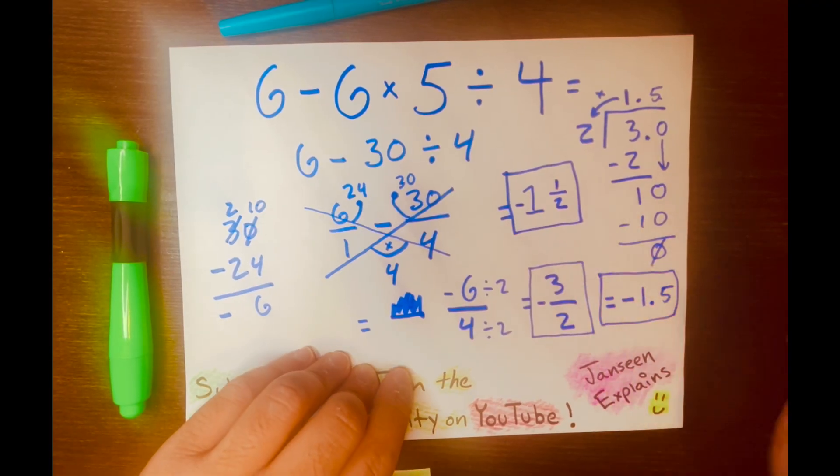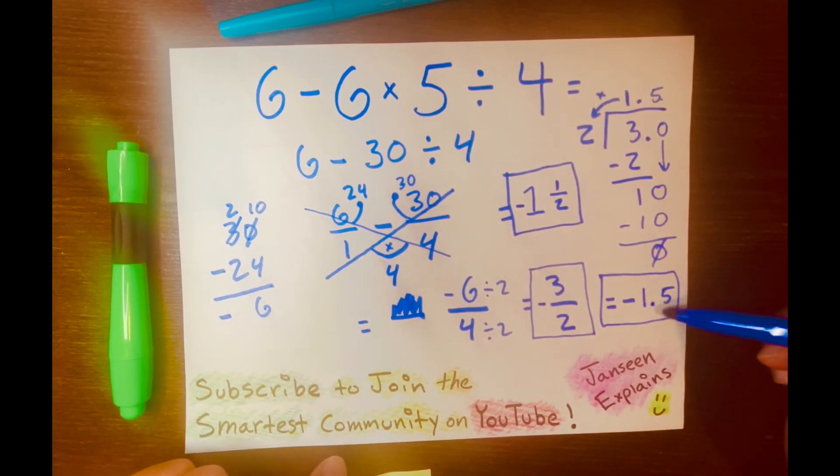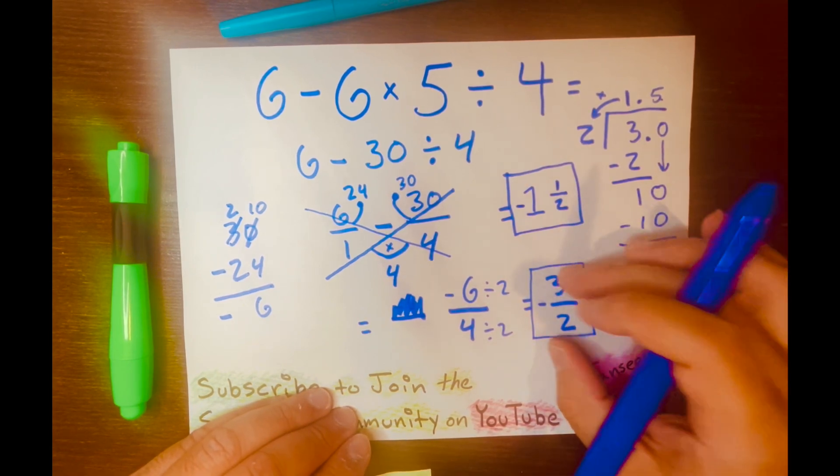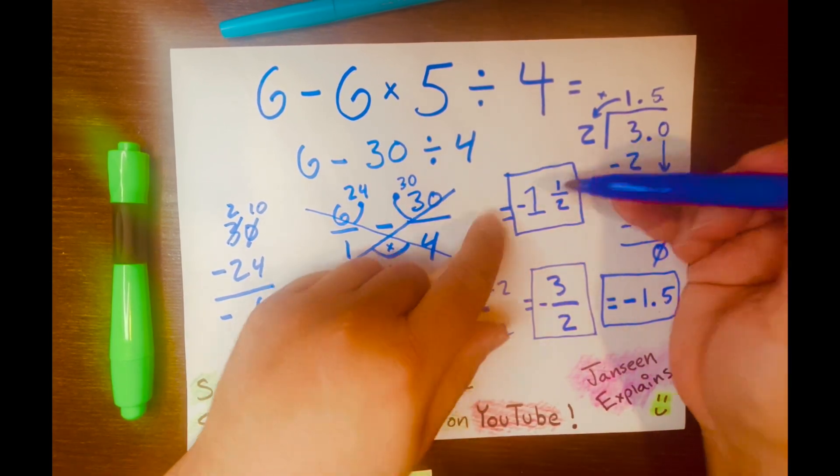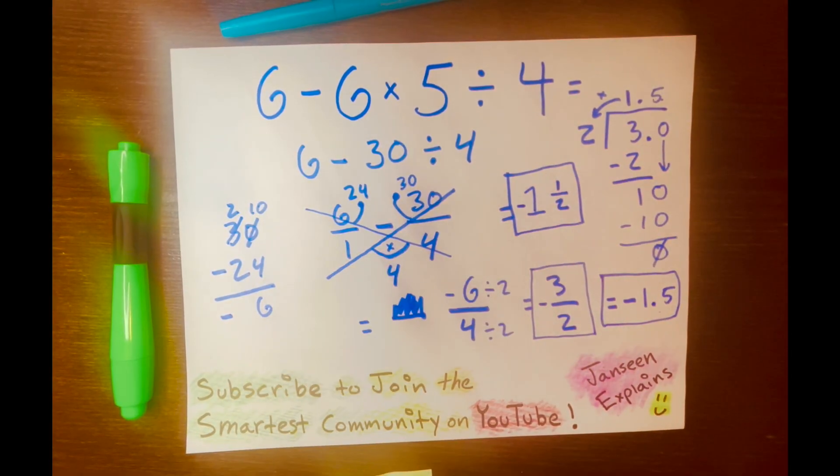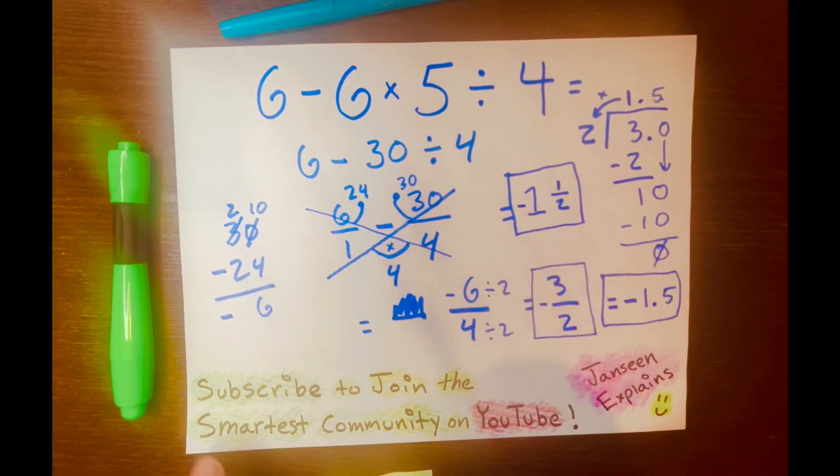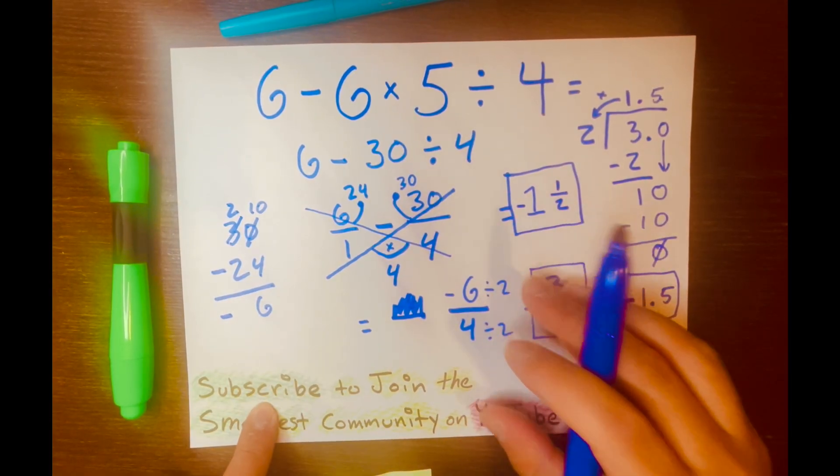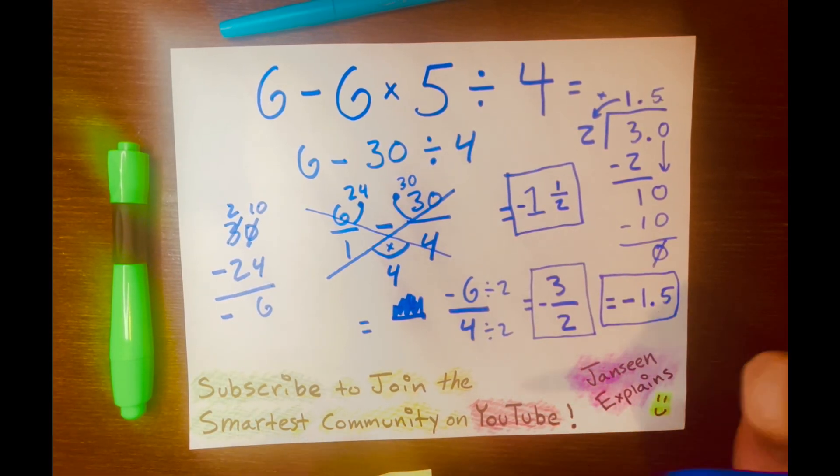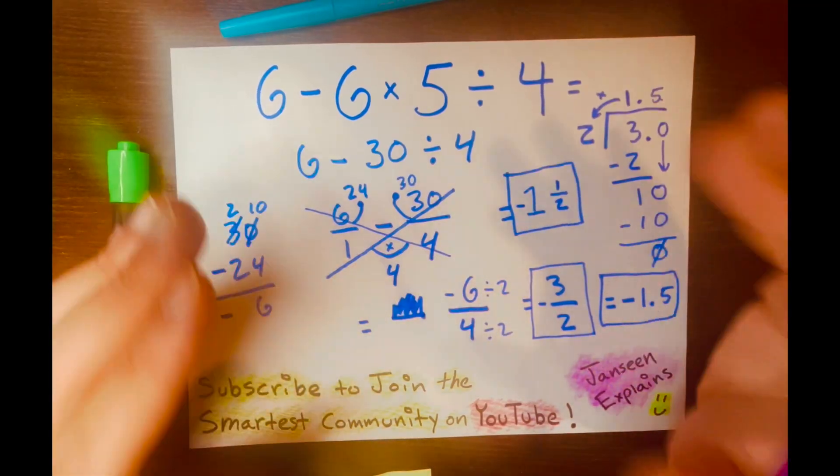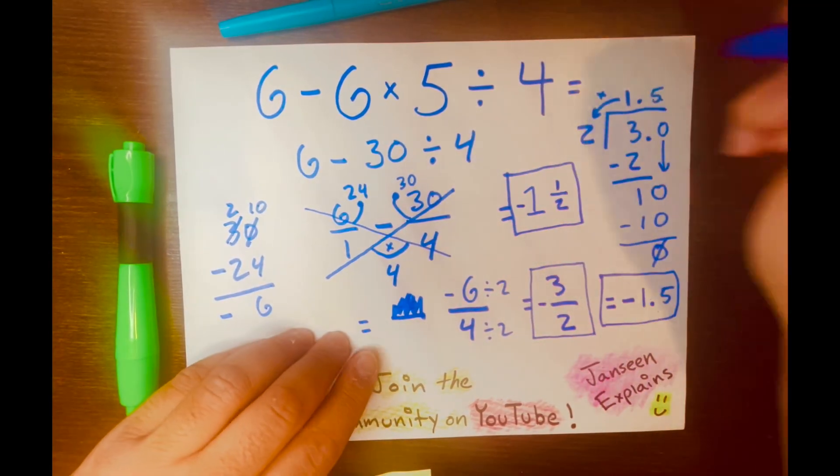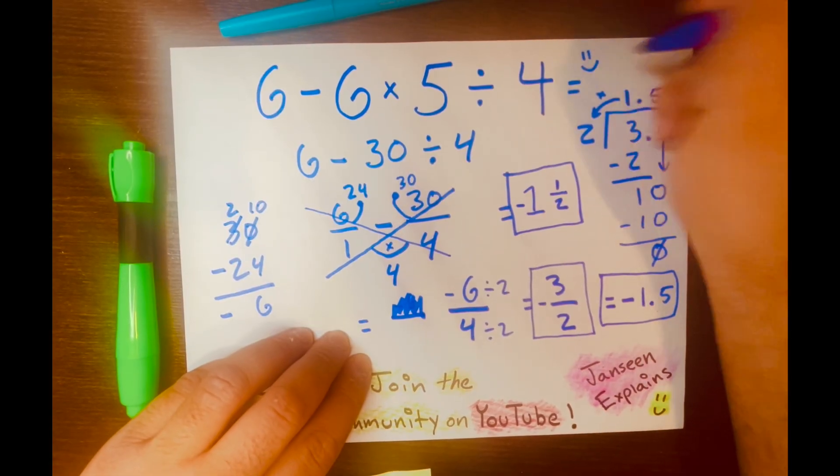Look at that. We got 3 different answers. We got negative 1.5. We got negative 3 over 2, the improper fraction. And then, our mixed number answer, negative 1 and 1 over 2. And there you go. If you have not subscribed to the channel, please subscribe to join the smartest community on YouTube. Thank you so much for watching this video. I'll see you in the next video. And here's a happy face for you.